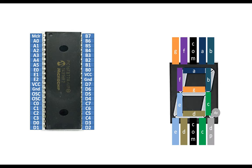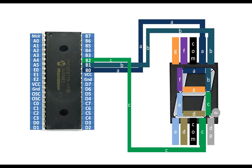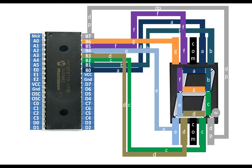The last one is DP — the dot pin — and its pin is the bottom right pin. If you give 5 volts to this pin while giving ground to the common, the dot will turn on. For the wiring: I connect the A pin to B0, using Port B. B0 drives the A LED, B1 is B, B2 is C, B3 is D, B4 is E, B5 is F, B6 is G, and B7 is DP — the dot pin.